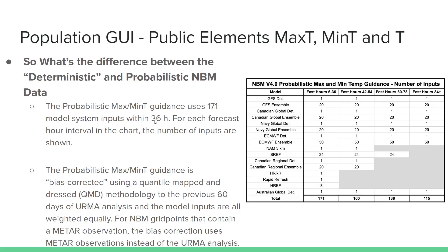So what's the difference between this deterministic and probabilistic NBM data? Probabilistic max t, min t uses 171 model system inputs within 36 hours — you can see those membership numbers at the right. The probabilistic max t, min t guidance uses a different bias correction scheme: a quartile mapped and dressed (QMD) methodology applied to the previous 60 days of IRMA analysis, and all model inputs are equally weighted. For NBM grid points containing a METAR observation, the bias correction uses the METAR instead of the IRMA analysis.